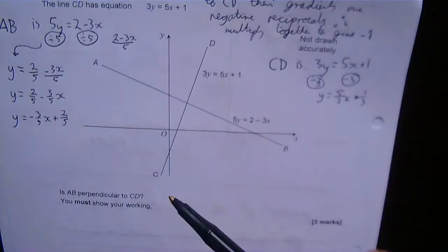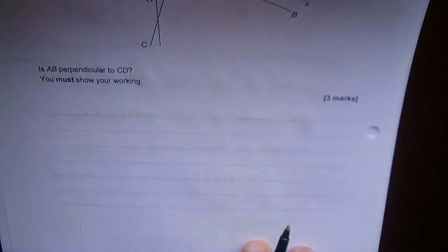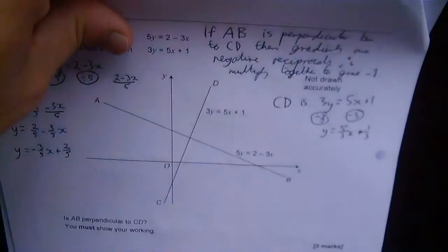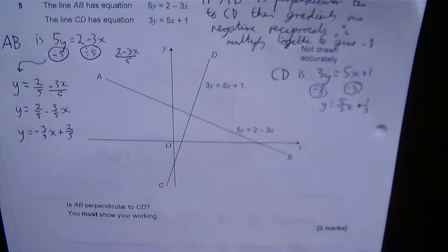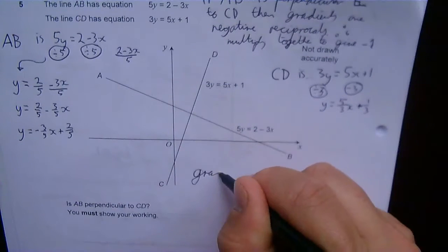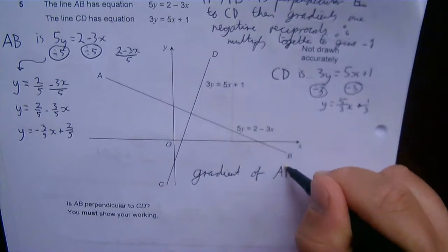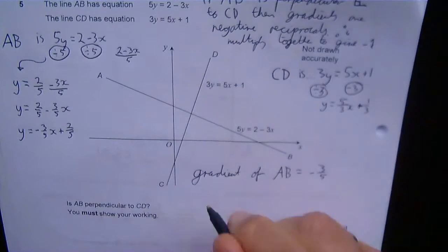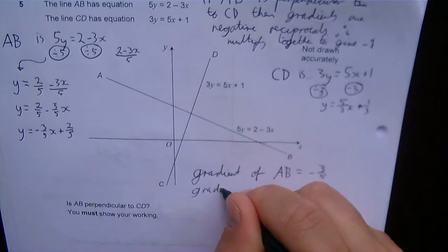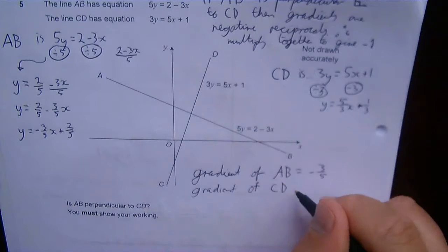I would be doing this all here normally, but just for the video I'm keeping it here. So gradient of AB equals -3/5, gradient of CD equals 5/3.